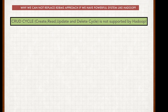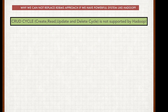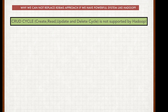The important reason why RDBMS cannot be replaced while processing structured data is the CRUD cycle. RDBMS supports the CRUD cycle — Create, Read, Update, and Delete — but Hadoop does not support the CRUD cycle. Hadoop cannot update or delete rows, and so these operations can only be achieved through RDBMS.